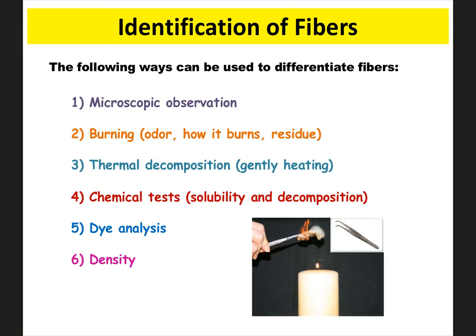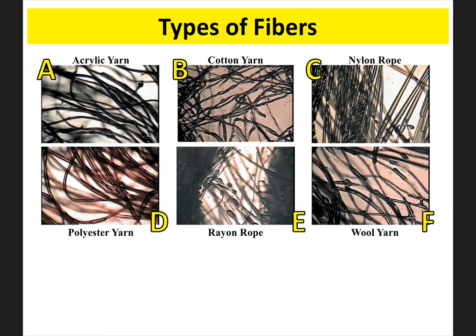To figure out what type of material a fiber is, there are several methods available. You can look at fibers under a microscope, burn them — as different fibers burn differently, curling away from the flame, melting, leaving a residue, or giving off different odors — run chemical tests, analyze the dye, or measure the density. There are definitely different ways to analyze fibers and determine their type.